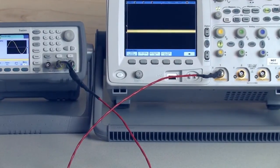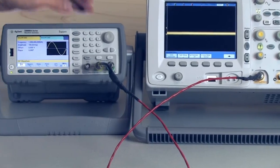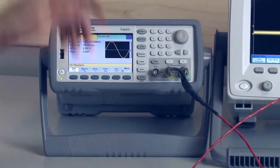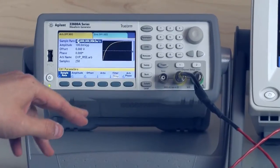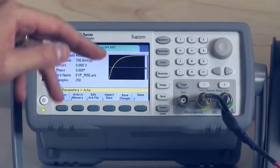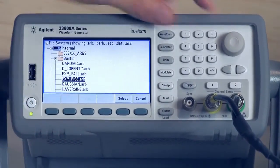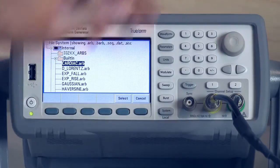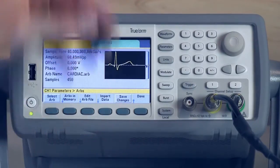And we'll go ahead and walk you through just creating a simple differential signal. Let's start off by using a cardiac signal since we had talked about biomedical signals before. So I'm going to press ARB, select ARB, and just scroll up into the built-in cardiac signal. And here you see the simple heartbeat.